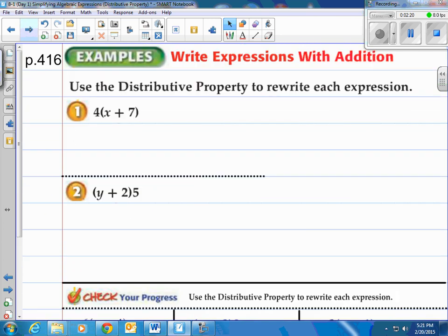Alright, let's take a look at an example. It says use the distributive property to rewrite each expression. First notice we have 4 times the quantity of x plus 7. So we're going to distribute that 4. When we do so, we say 4 times the x and 4 times the 7. We've got to remember to do it to each of the pieces inside. The number on the outside gets distributed to the inside. Each piece. When we do that, we have 4x plus 28.